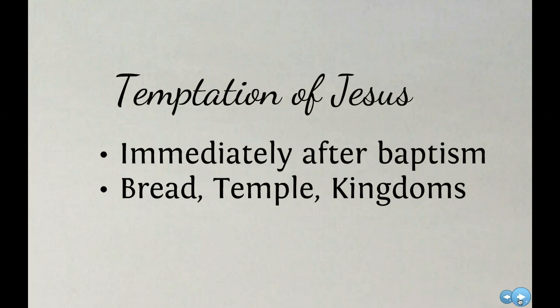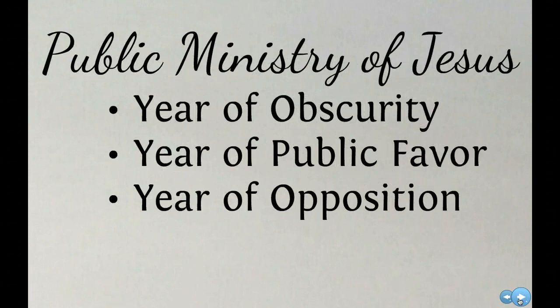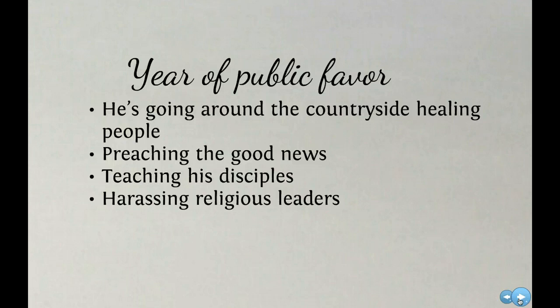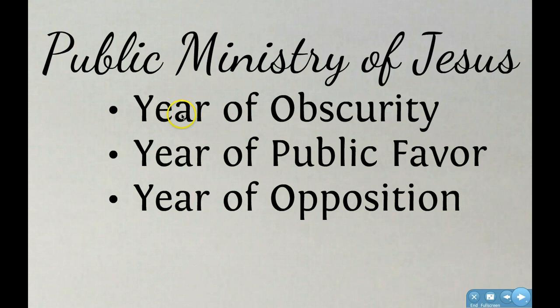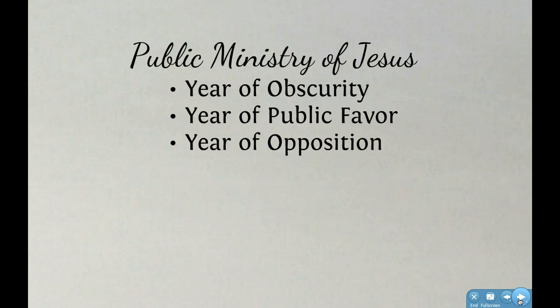The public ministry of Jesus is divided into three categories by Metzger: the year of obscurity, the year of public favor, and the year of opposition. These three are very self-descriptive - Jesus was obscure, then he had public favor, then he was opposed. The year of obscurity is the first year of his ministry and we don't know anything about it - he was just gathering followers that first year. Then the second year is the year of public favor, when he's going around the countryside healing people, preaching the good news, teaching his disciples, and harassing religious leaders.